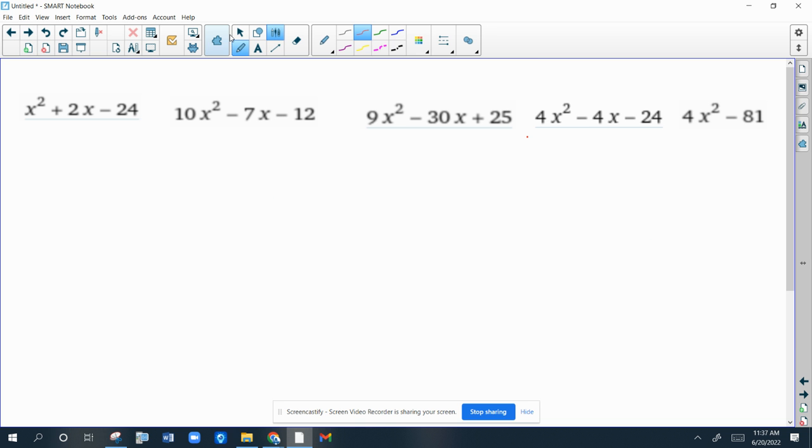The last one. The last one is called a difference of squares. The first and last terms are perfect squares. And this is a minus. This has to be a minus. Difference of squares always factor like this. This is the square root of the first term. And this is the square root of the last term. And you're done.